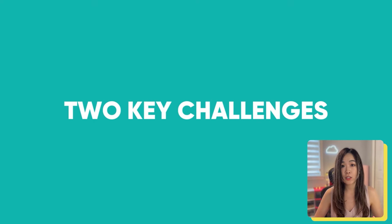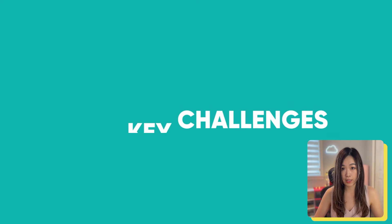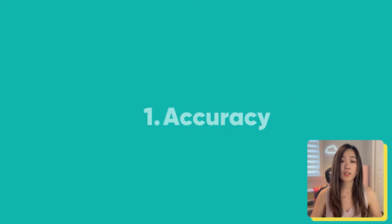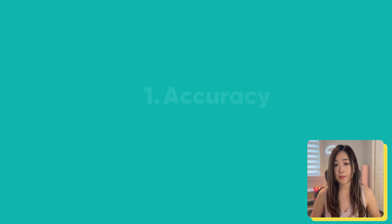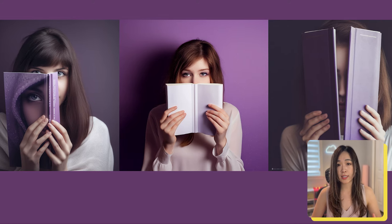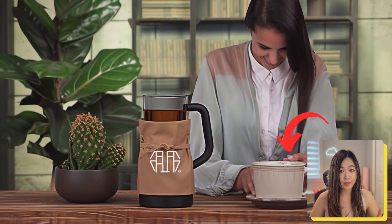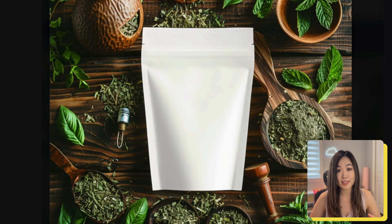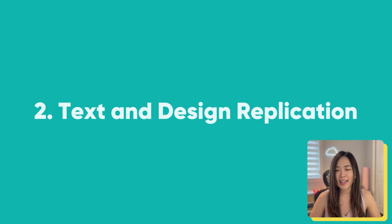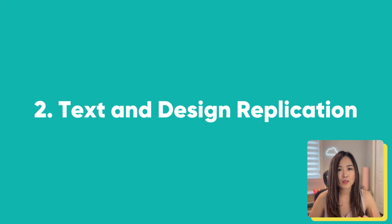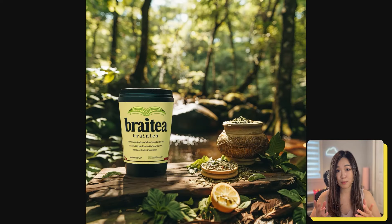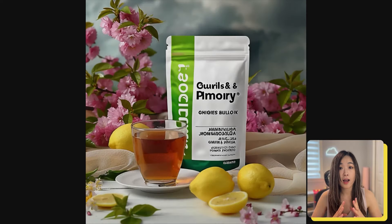There are two key challenges of AI-generated product images. First is accuracy — AI-generated images can mislead on proportions and details. We'll have to make sure our images reflect reality and not catfish our customers with inaccurate information. Also, AI often struggles with replicating text and design on packaging accurately, so you often get misspelled words and distorted design.